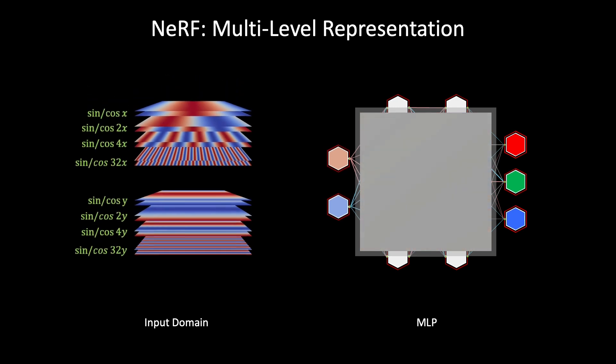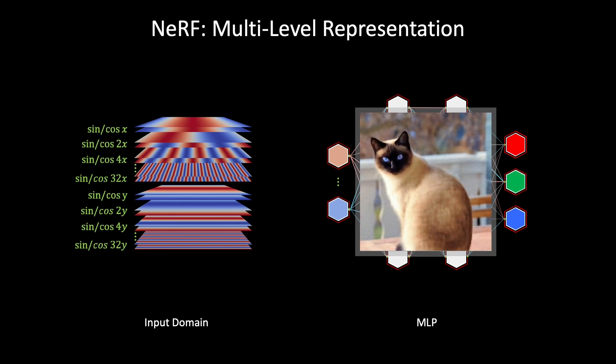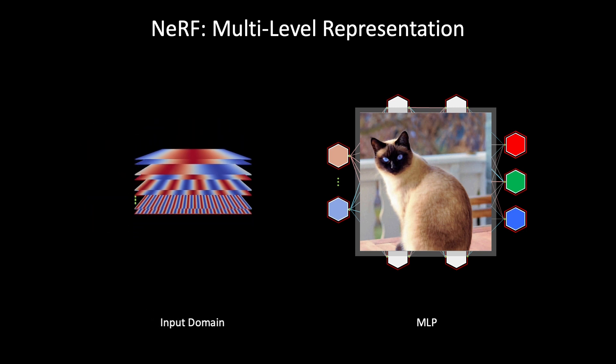By employing this multilevel representation, NeRF successfully recovers high-frequency details that were previously unattainable. However, the pure MLP representation suffers from slow optimization speed, primarily due to the high computational requirements of floating-point operations involved in MLP access for each sample point.